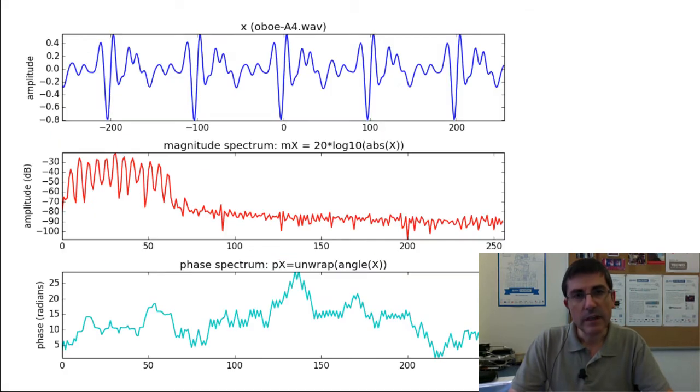So let's see an example. Our x[n] is this top plot, which is, in this case, a series of samples of an oboe sound. And then when we compute the DFT, we obtain this complex function, capital X, that can be expressed in polar coordinates, can be expressed with a magnitude and a phase, but let's first hear the sound.